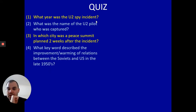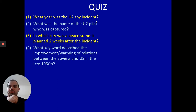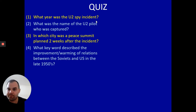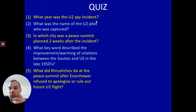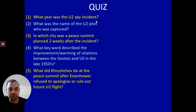Question four — a keyword from last lesson: what keyword described the improvement or warming of relations between the Soviets and the US in the late 1950s? The word begins with a T. Question five: what did Khrushchev do at the peace summit after Eisenhower refused to apologize or rule out future U2 flights?